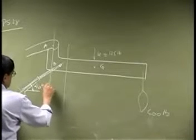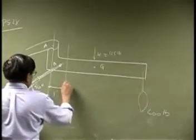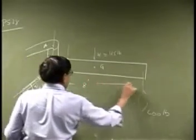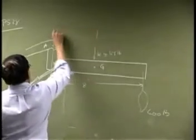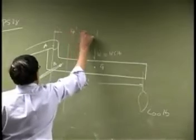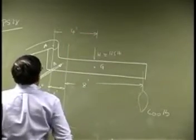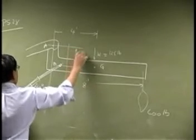Then some of the distances. This distance here is 1 foot. This distance here is 8 feet. Then the distance between the center of gravity and the A is another 4 feet. Then the vertical distance between A and B is another 1 foot.